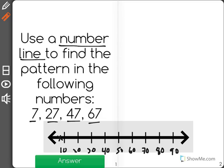Now I'm going to mark these on my number line. I know 7 will be just before 10, 27, 47, 67.